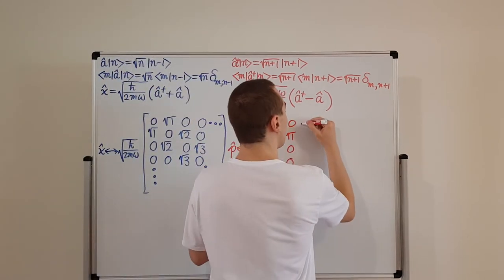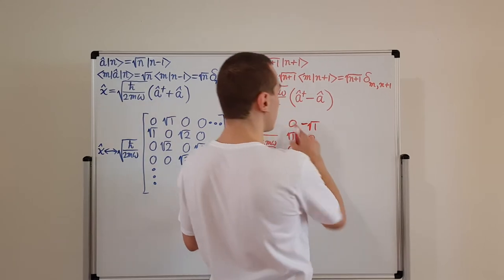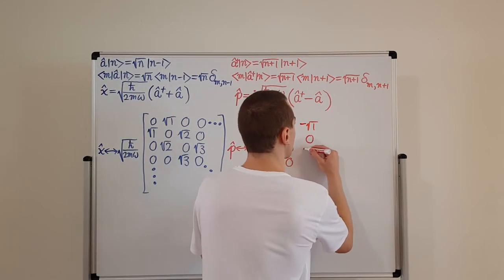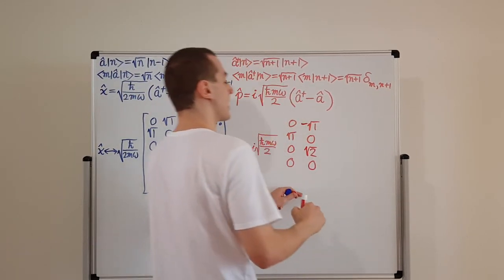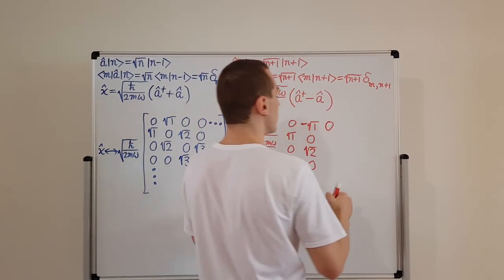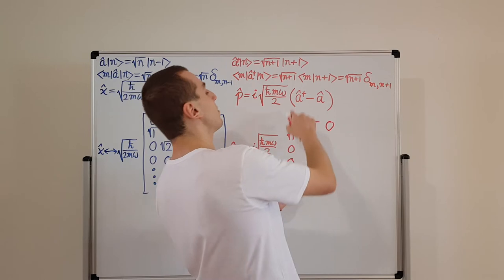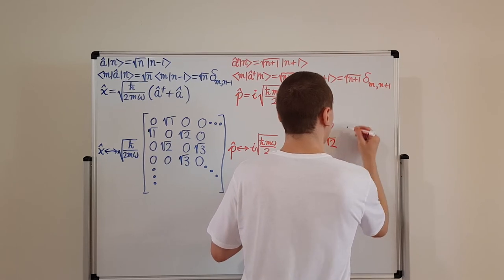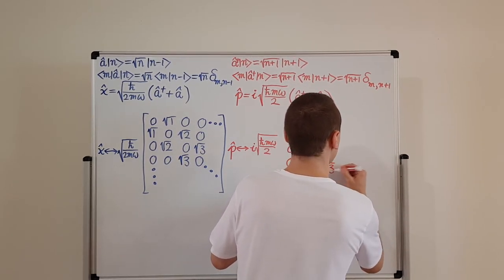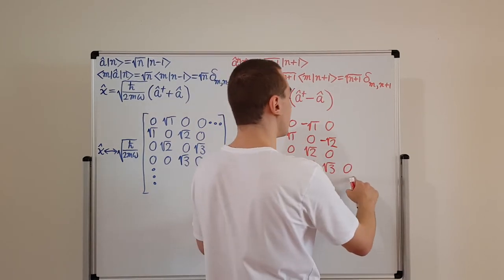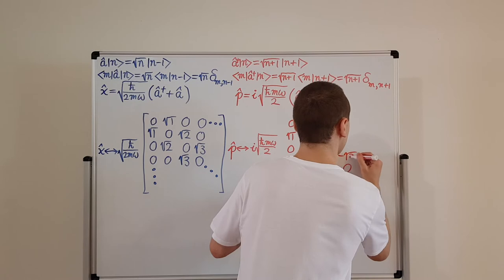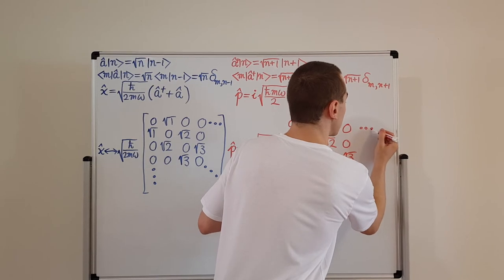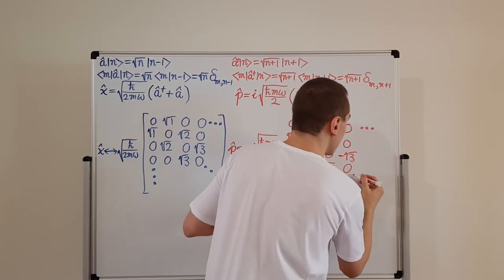The momentum matrix with coefficient i√(ℏmω/2) out front has: the lower off-diagonal with +√1, +√2, +√3 (from A-dagger), and the upper off-diagonal with −√1, −√2, −√3 (from A). The diagonal is zeros. Column labeling starts from 0. The pattern continues: +√3, −√3, then +√4, −√4, and so on. This is an unbounded, infinite matrix.